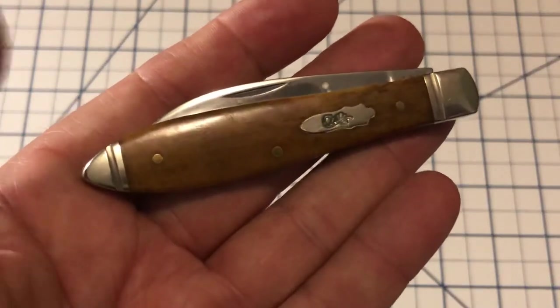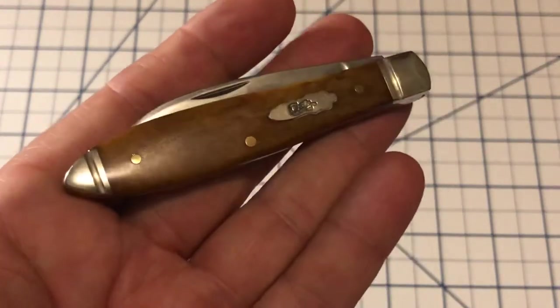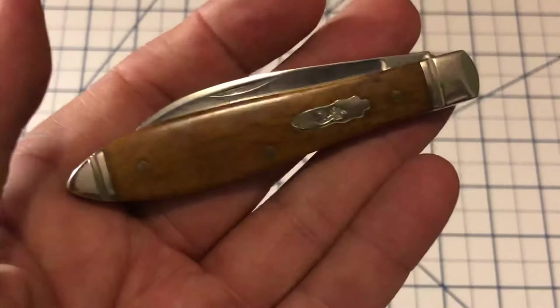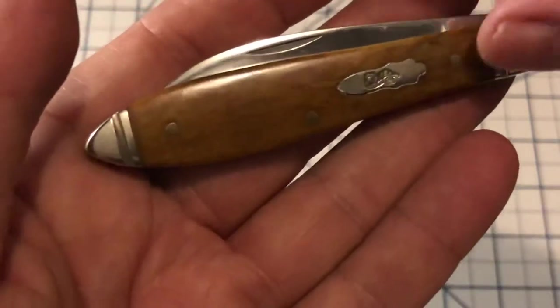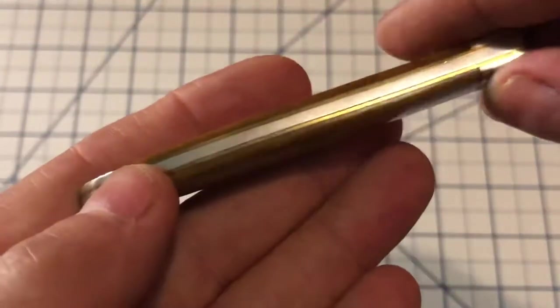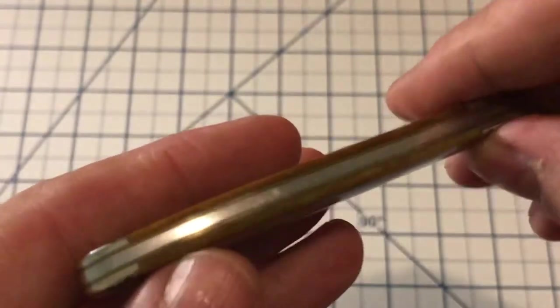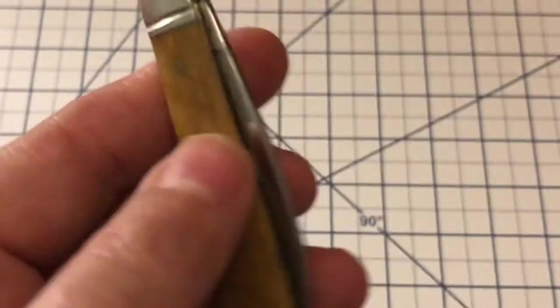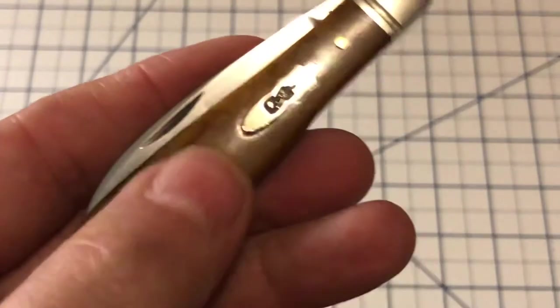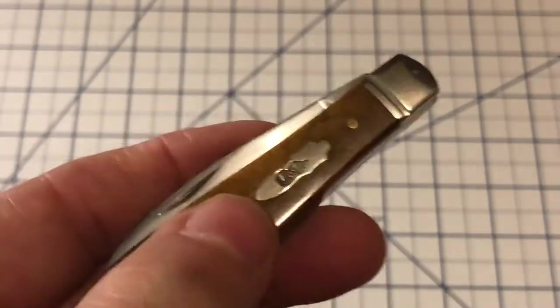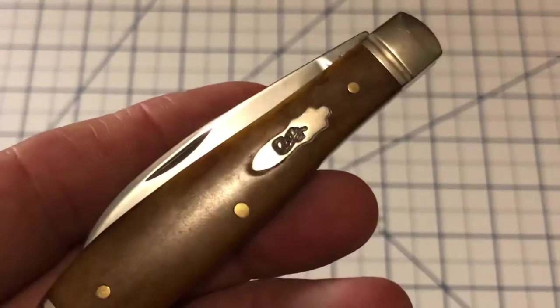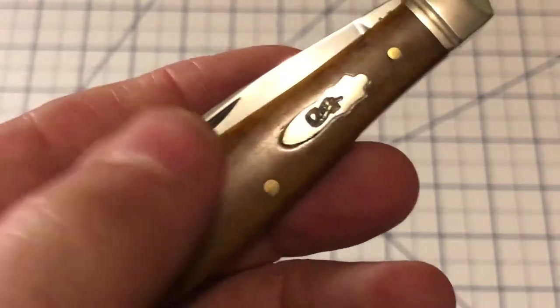We've got nickel silver bolsters that you can see each have a single thread on them. The back spring is just a slight bit of gapping but otherwise very good quality and you can see it's got the Case bomb shield with Case in script on it.